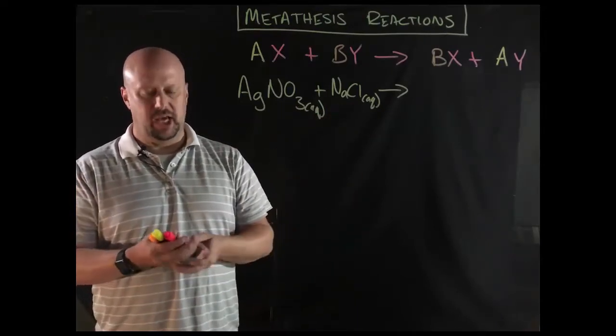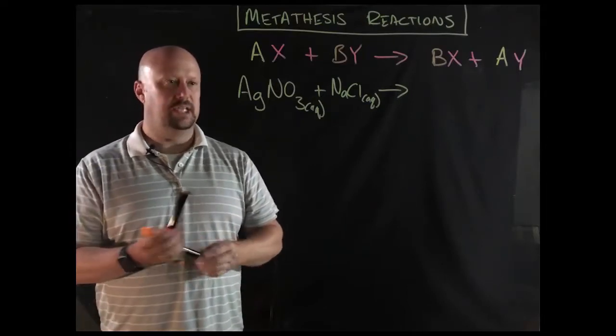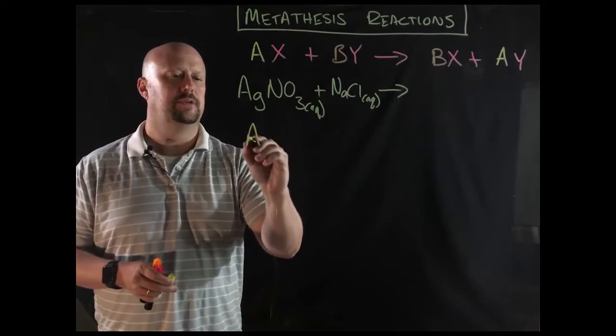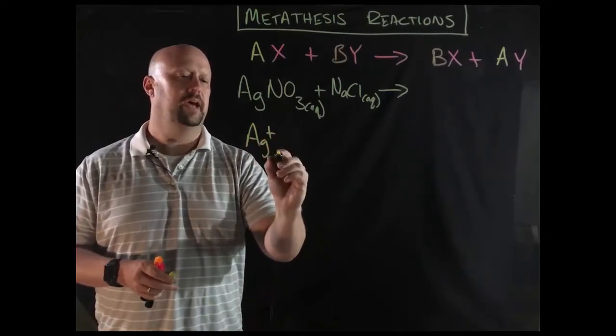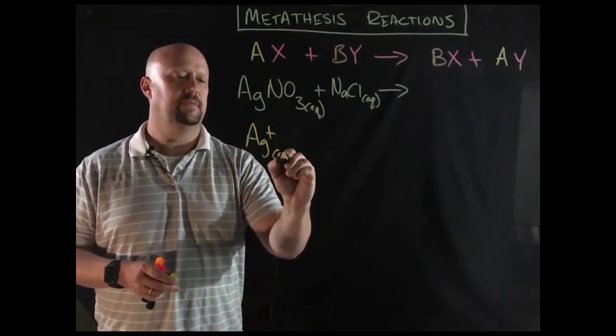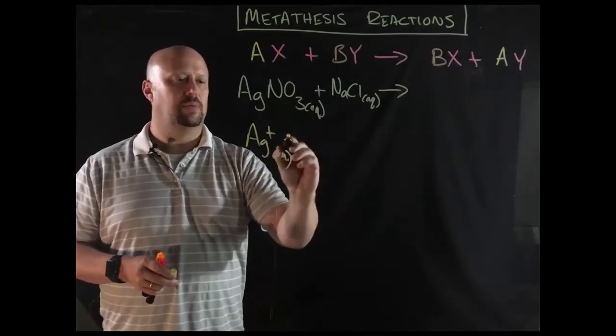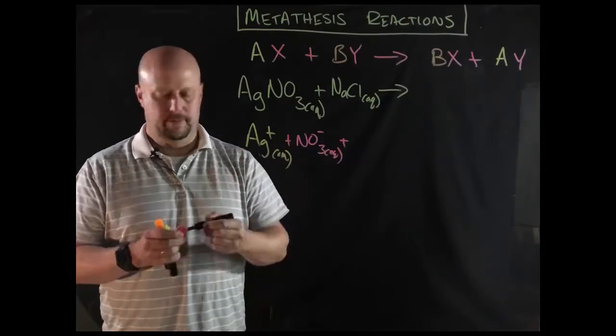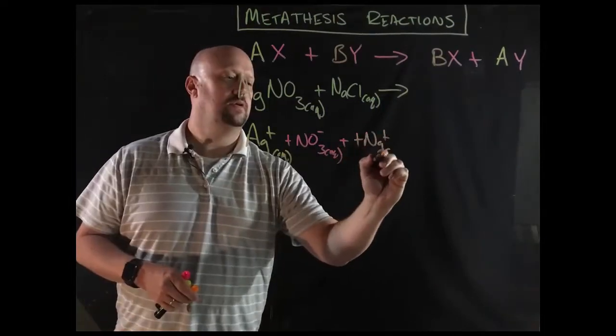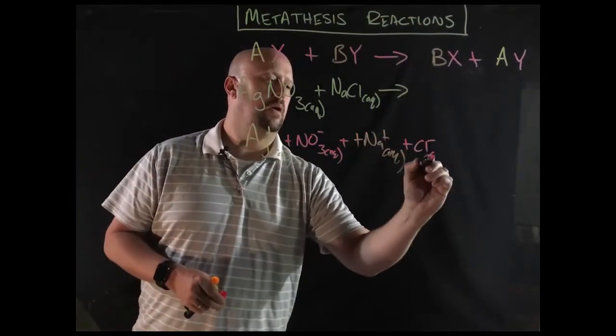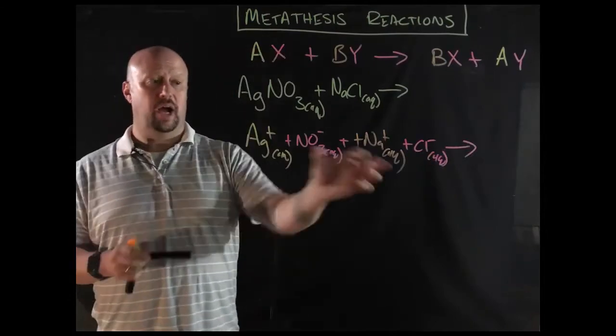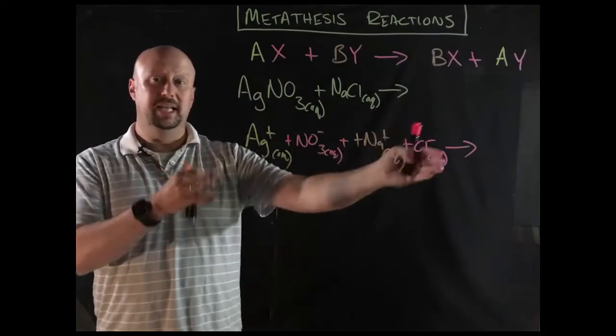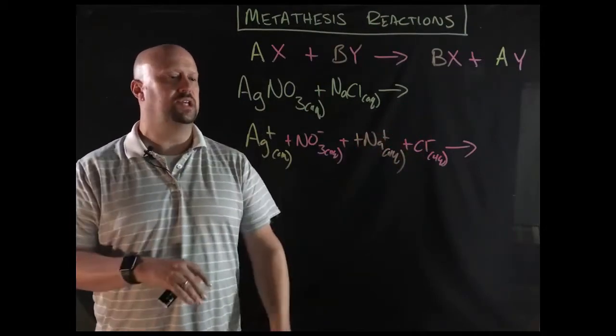Now, what that means as far as completely dissociate, what that would really mean is that I would end up with silver ions in the aqueous state, nitrate ions, sodium ions, and chloride ions. So really what's going to happen is that if we break everything up into the ions, and we're going to need to do this in a second, we're going to do net ionic equations momentarily, but to tell us what the products are going to be, we split everything up into the ions.